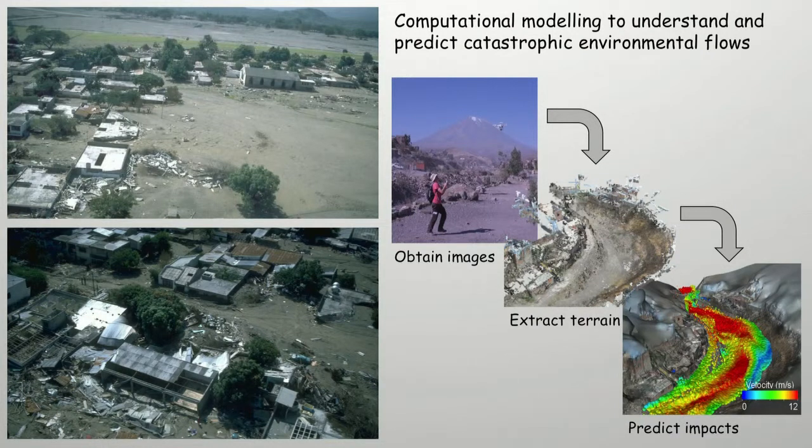I'm approaching this problem by applying principles and methods of computer vision, which is usually used to make robots see and understand the world. First, I acquire aerial images using a remote control quadcopter of the region we're interested in. Then, using these computer vision principles, I've developed a process to convert these images into a representation of the terrain, which we can use to run our computer models on.